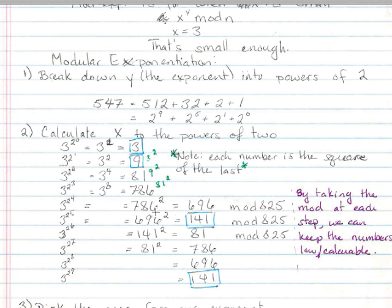And note that we can also, at each step, we can take the number mod 825. So, 786 squared equals 696 mod 825. And as I wrote over here, by taking the mod at each step, we can keep the numbers low and calculable. So, each time we do that, we're just squaring the last number and making sure we take the modulus each time to keep the numbers low.